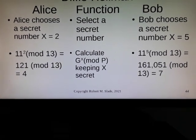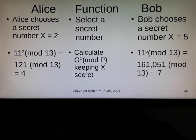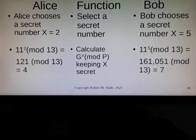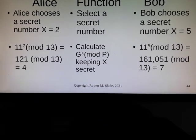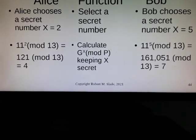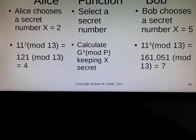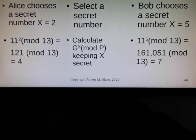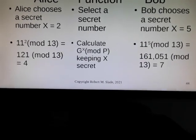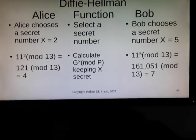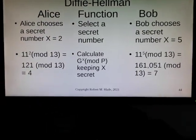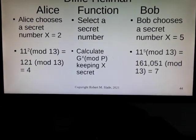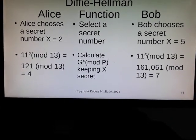Bob, having chosen x equals 5, is doing 11 to the fifth power mod 13. That's the number 161,051 mod 13, which equals 7. So they've each got those numbers that they chose as secret.